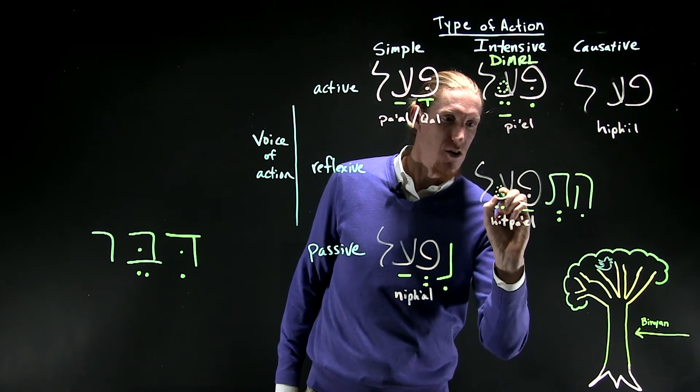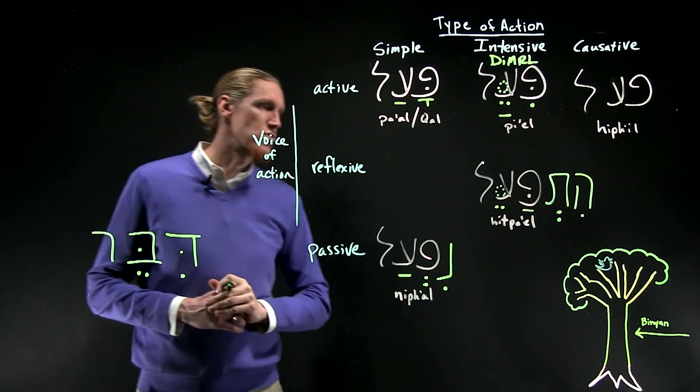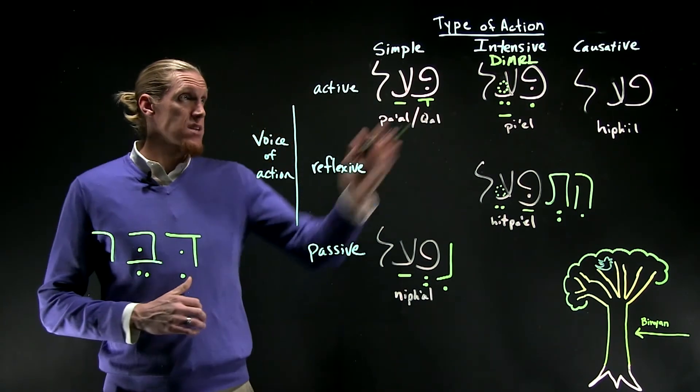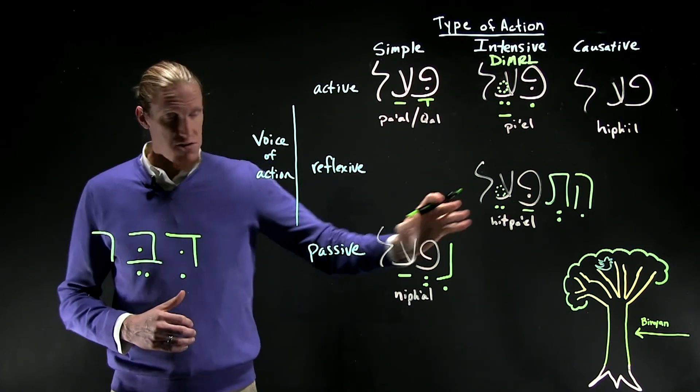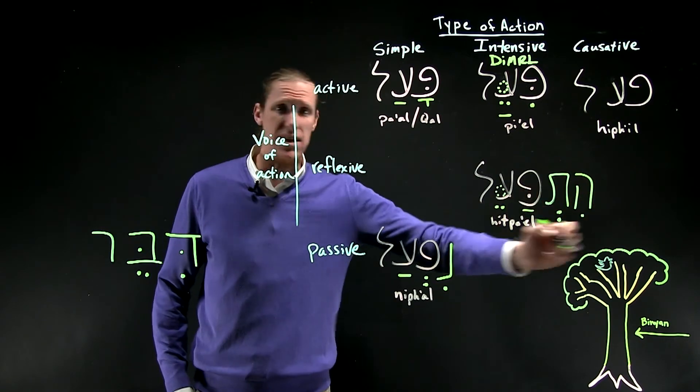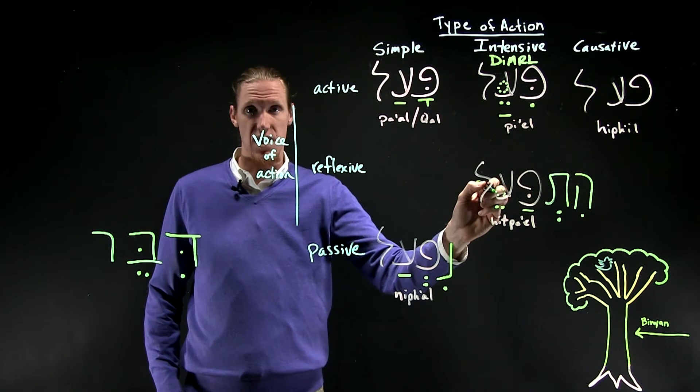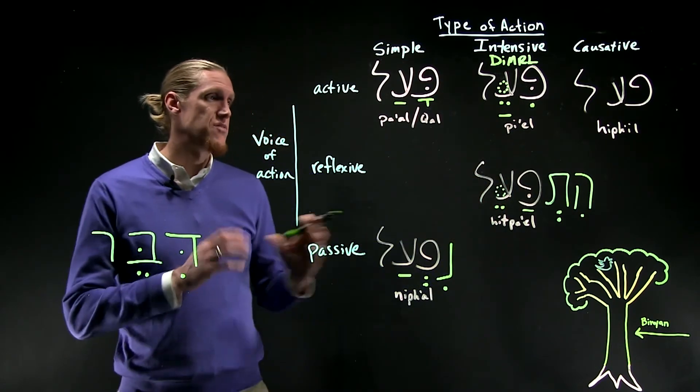It also has the phantom dagesh forte in the middle root letter. And it's the intensive and reflexive stem. And so you'll see this het on the beginning. That's the clear visual sign. Het as well as a dagesh forte in the middle root letter. Those are the visual signs.